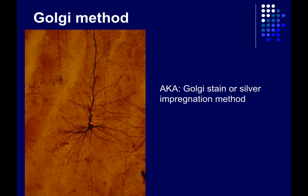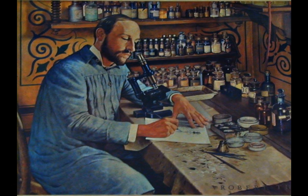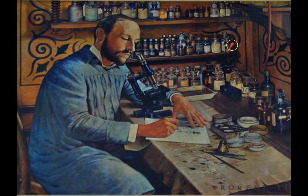Cajal relied heavily on this and other staining techniques, which allowed him and his contemporaries to unravel the microscopic structure of the nervous system. Here is a drawing of Cajal doing what he did for most of his career: looking at carefully prepared specimens under a microscope and painstakingly reproducing with pen and ink what he saw. Cajal wanted to be an artist as a young man, but his father forced him into medicine — he ended up combining these two interests to great effect. In the background you can see some of the chemicals used to prepare slides and highlight specific aspects of the tissues.